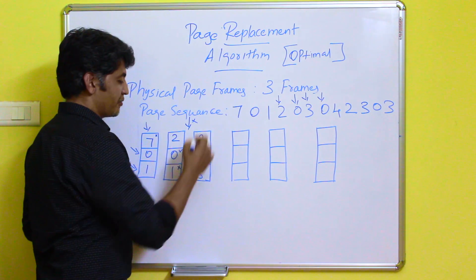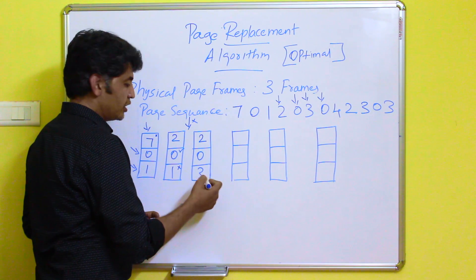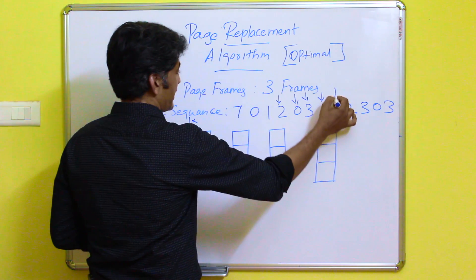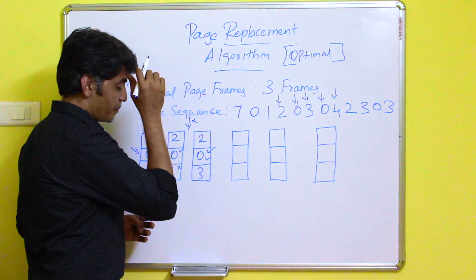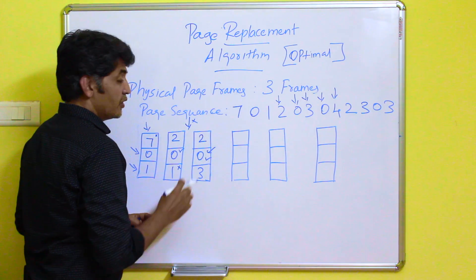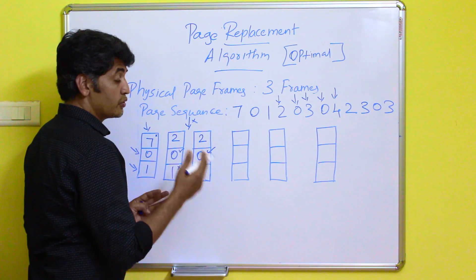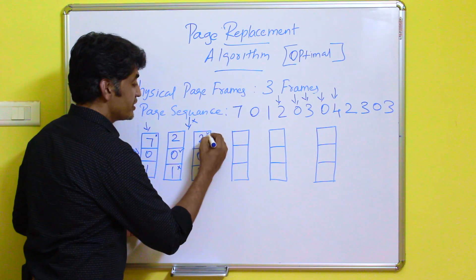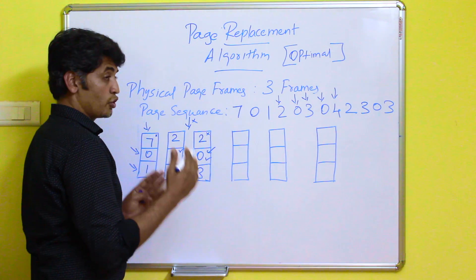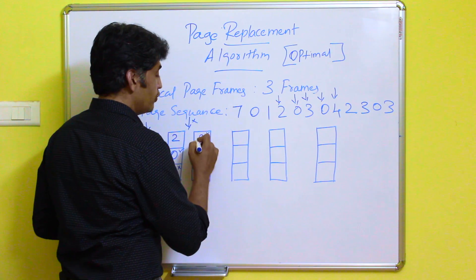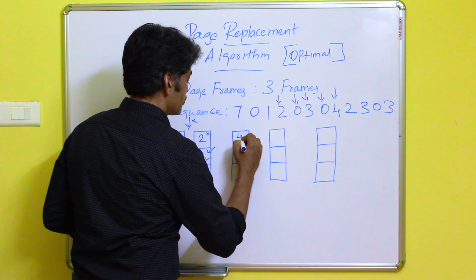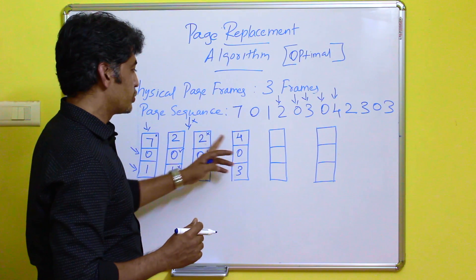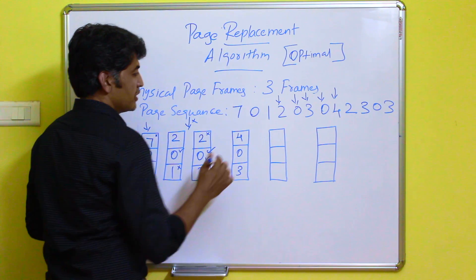Next, page 0 is required again. The operating system verifies page 0 is present — page hit occurs. After that, page 4 is newly required. Comparing pages 3, 0, and 2, page 2 is not used for the longest period of time. So page 2 is replaced by page 4. The frames are now: 4, 0, 3.